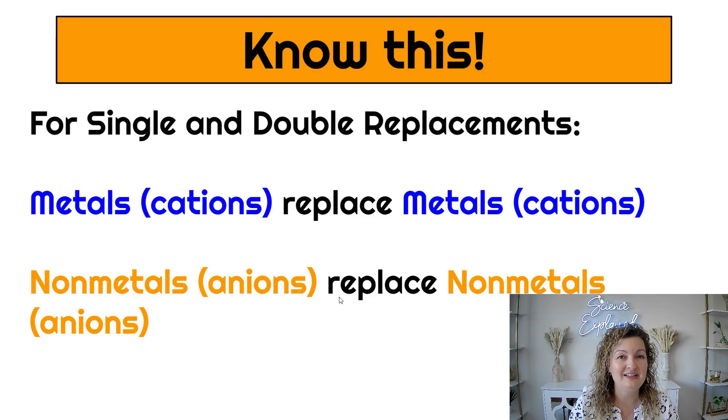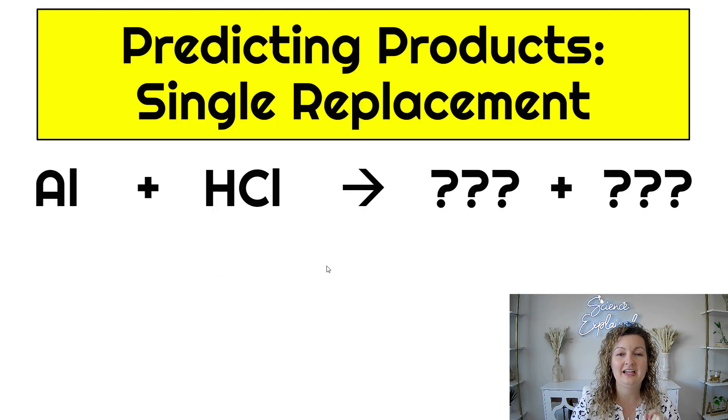Well we're going to be doing the same exact thing except we're going to be doing a metal can swap out another metal and a non-metal can swap out another non-metal. Now I can say that in another way. I can say that a cation can swap out a cation and an anion can swap out an anion. I'm saying it in that way because hydrogen is a non-metal but it is actually a cation instead of an anion like the rest of the non-metals.